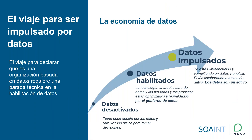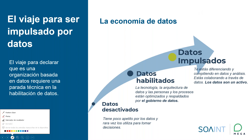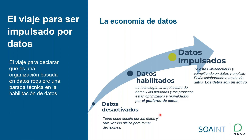Existe un concepto que es la economía de datos, en donde podemos obtener tres diferentes niveles. Tenemos los datos desactivados, donde hay poco apetito por los datos y rara vez se utilizan para tomar decisiones; aquí tenemos los sistemas legados o nuevos en donde se está almacenando información pero no hay un aprovechamiento de esos datos. Posteriormente tenemos los datos habilitados, que es lo que nos ayuda a generar un gobierno de datos, donde ya tenemos la tecnología, la arquitectura de los datos y también las personas y los procesos necesarios para poder empezar a utilizar los datos.